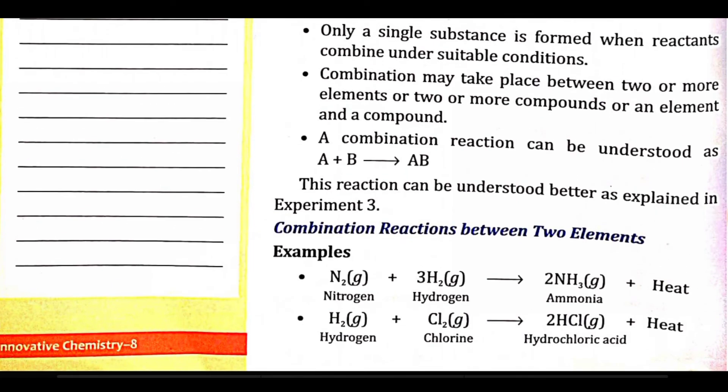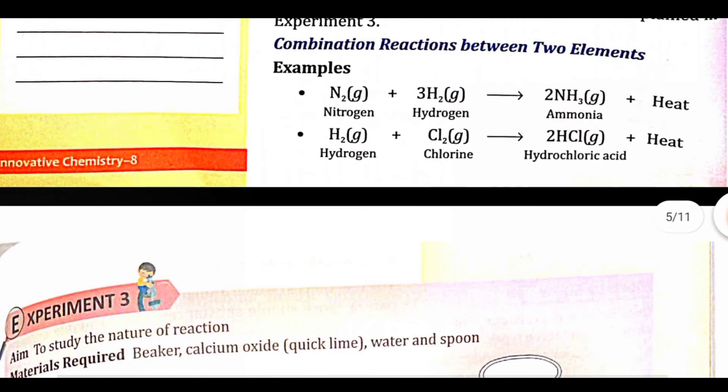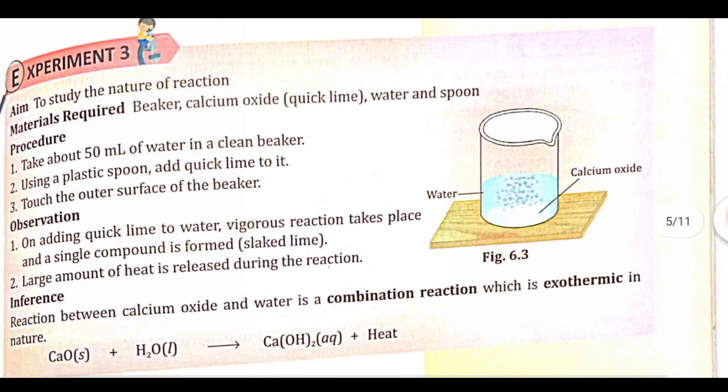Examples of combination reactions: N₂ + 3H₂ → 2NH₃ (ammonia) + heat — nitrogen and hydrogen combine. H₂ + Cl₂ → 2HCl + heat — hydrogen and chlorine combine. These are synthesizing examples.